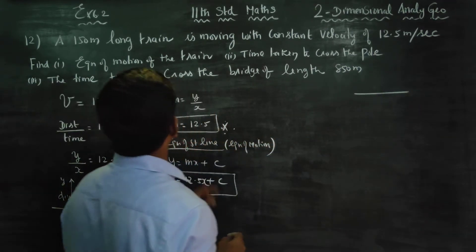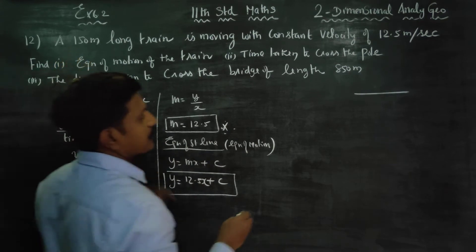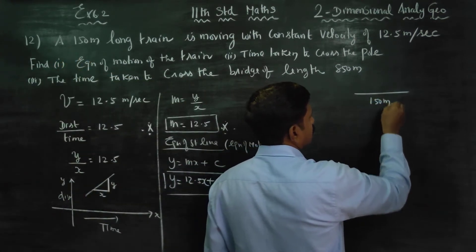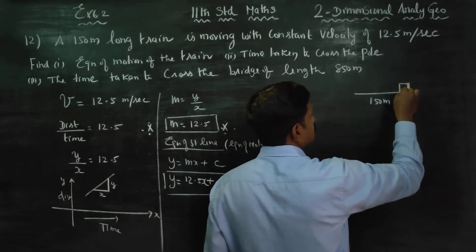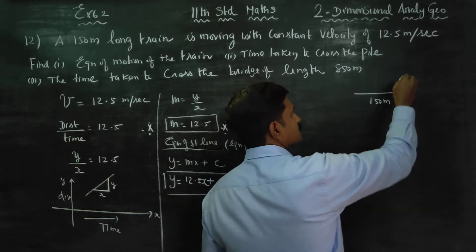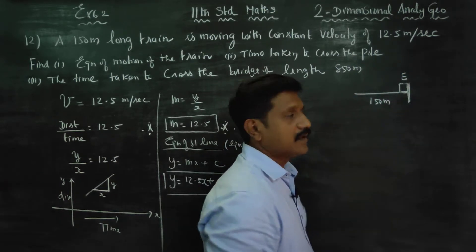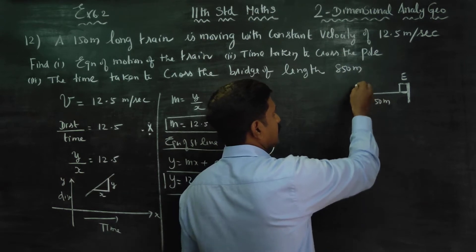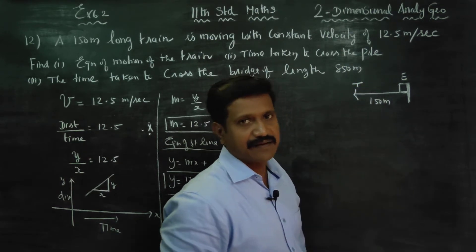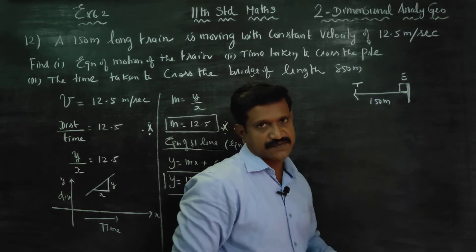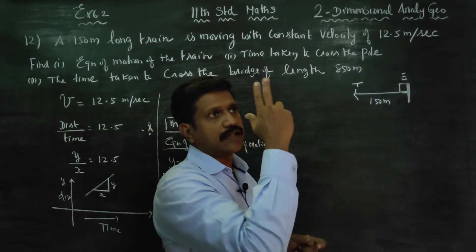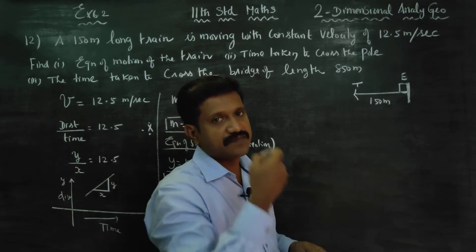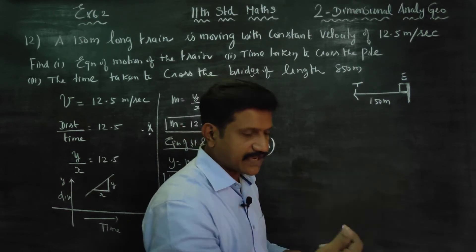This is the train. The train measurement is 150 meters. This is the train's starting edge, this is the first box, and this is the engine. This is the tail of the train. So this total length is 150 meters. Now, when you run, the gun and whistle are at the same time.